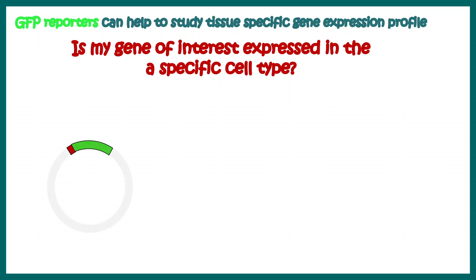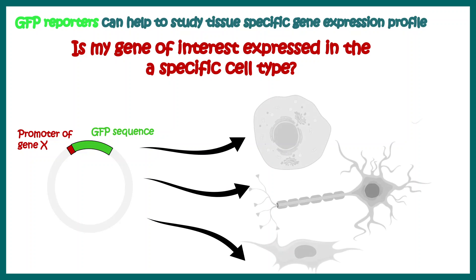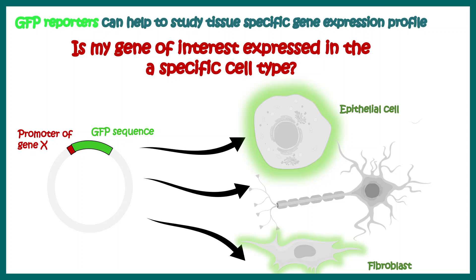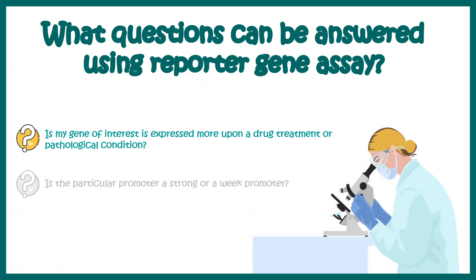To determine whether a promoter is tissue-specific or cell-type-specific, we clone the reporter gene underneath the promoter in an expression vector, then transfect it into different cell types — in this case an epithelial cell, a neuronal cell, and a fibroblast. Our goal is to monitor GFP fluorescence, since it reports the expression of the gene. In this hypothetical experiment, GFP fluorescence is observed in the epithelial and fibroblast cells but not in the neuron, meaning our gene of interest is selectively expressed in epithelial and fibroblast cells but not in neuronal cell types.